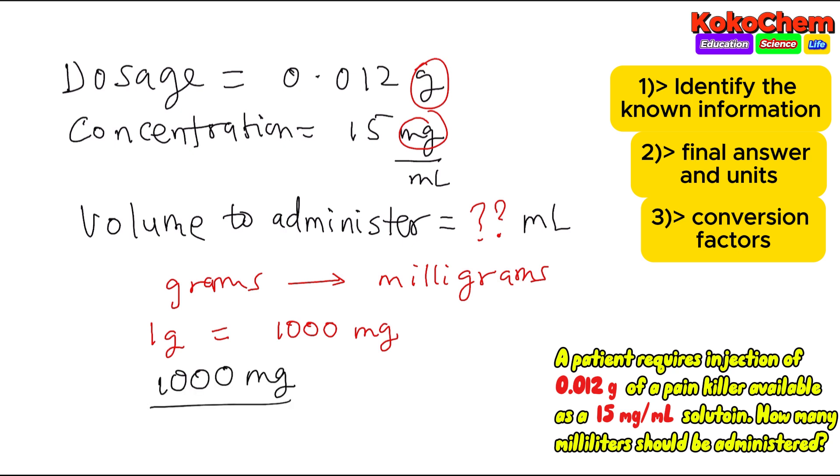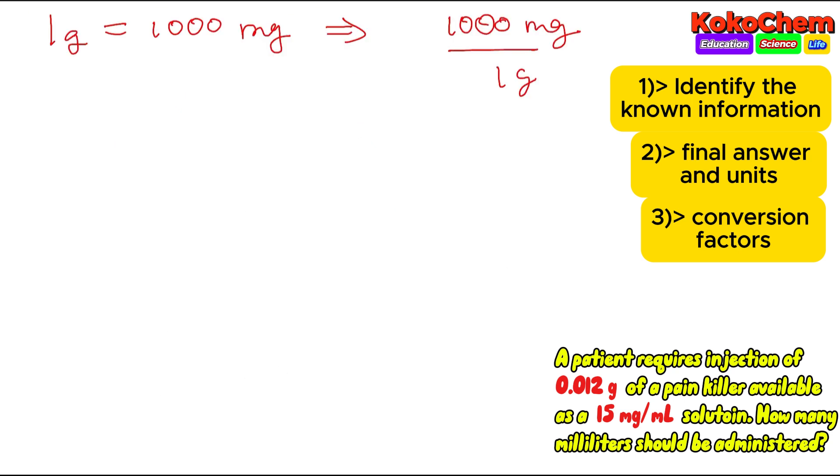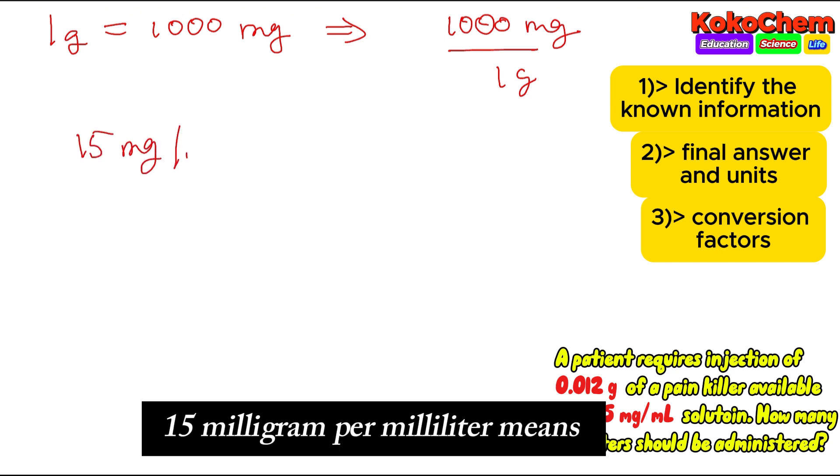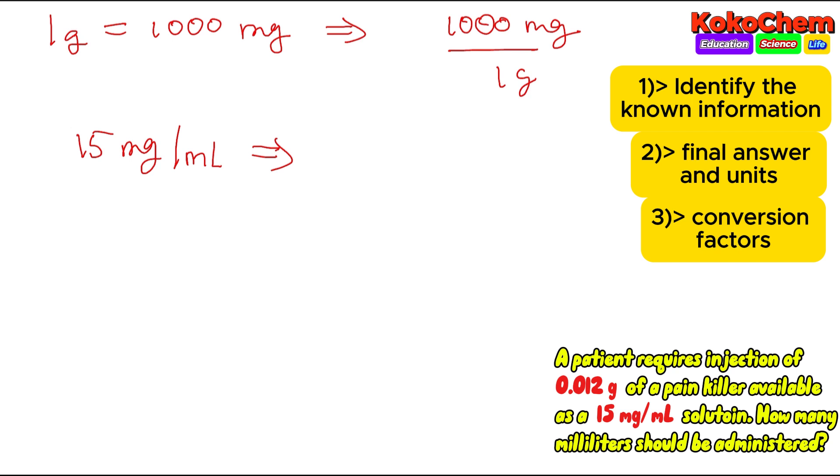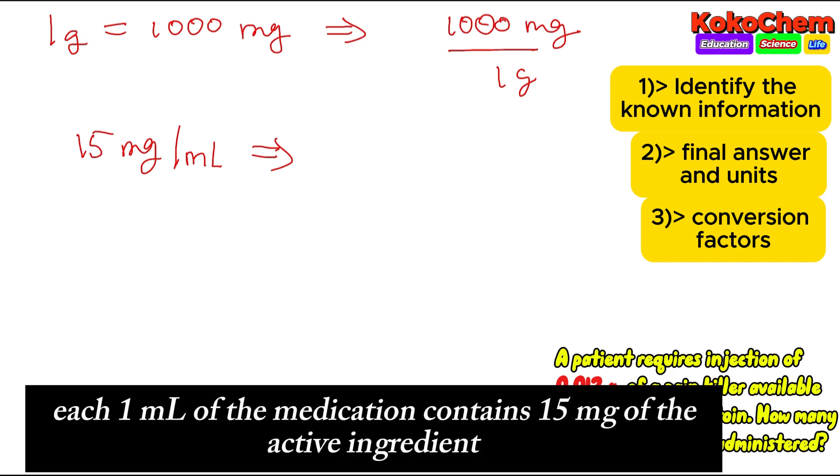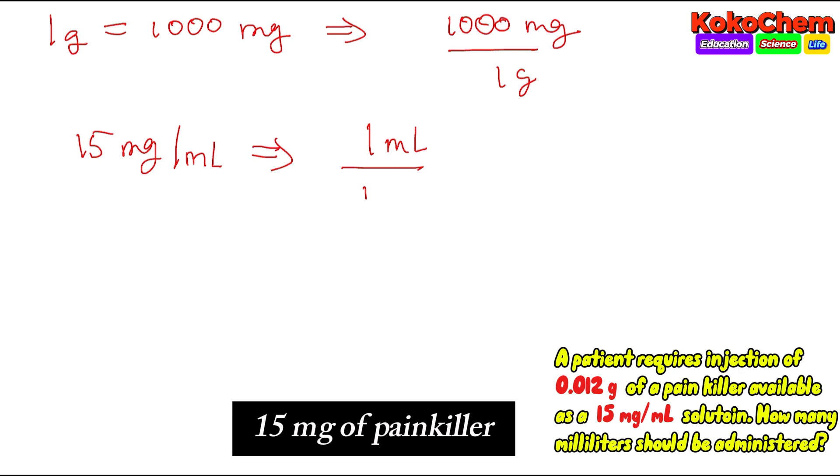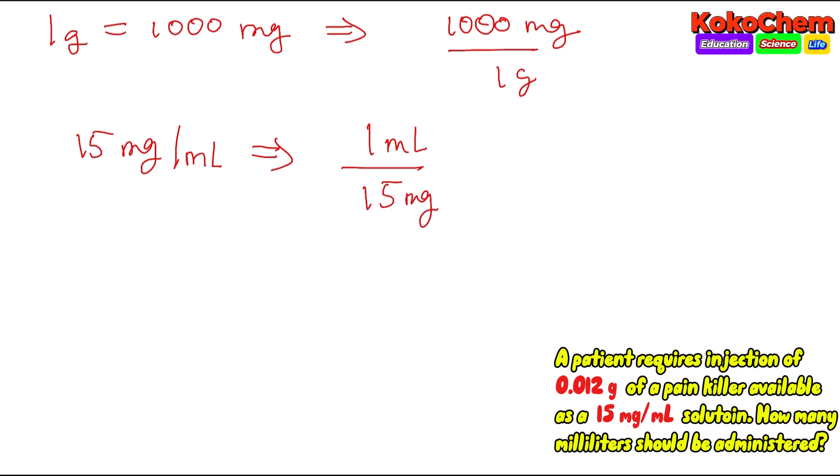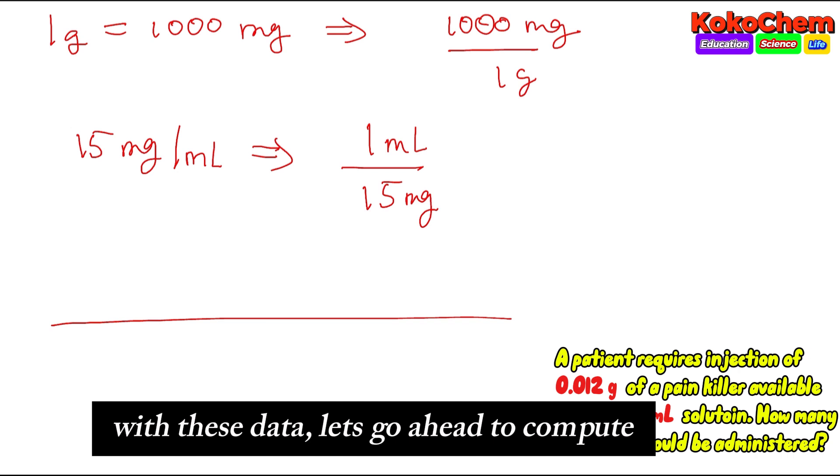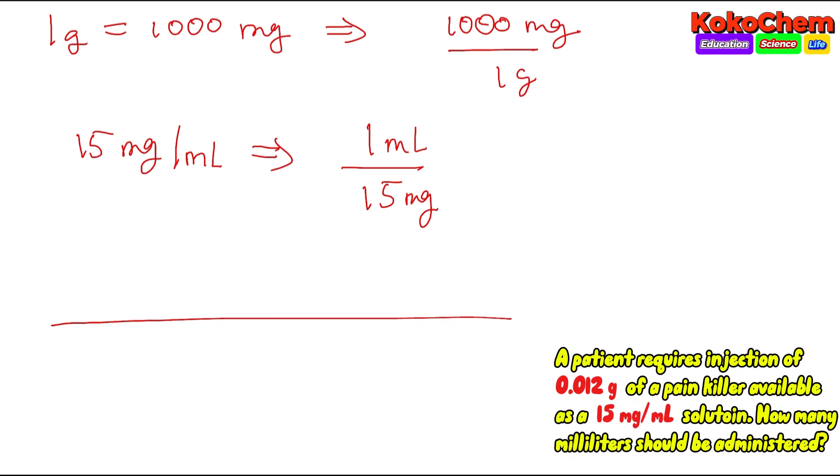So what do I say? I have 15 milligram per mL. This is using a table method that you've learned in your previous classes with two long division lines and vertical lines.